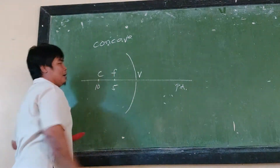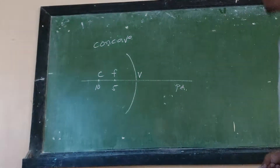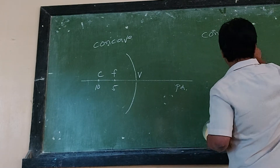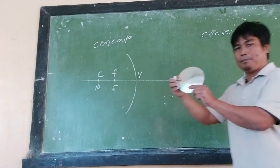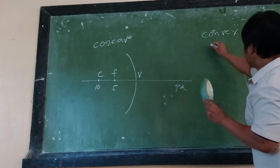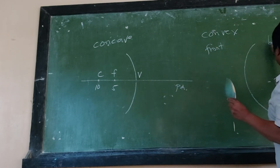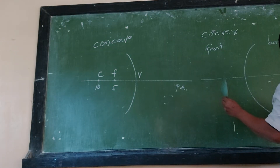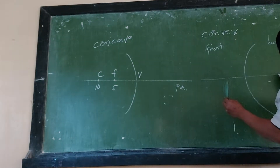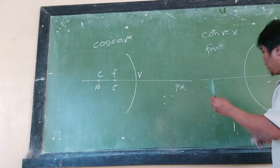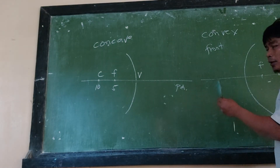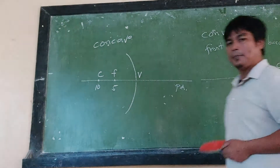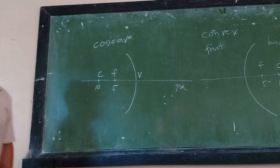For the convex mirror, if we draw it, it looks like this — this is its front and here is its back. This is the principal axis, and here is the center of curvature denoted by C. Here is the focus, and this is the focal length. So if the radius of curvature is 10, the focal length is equal to 5.